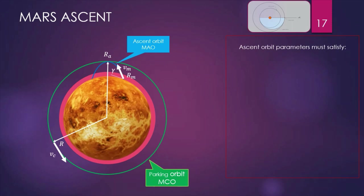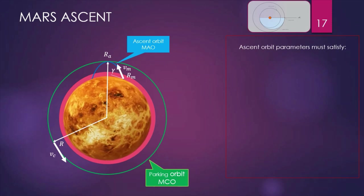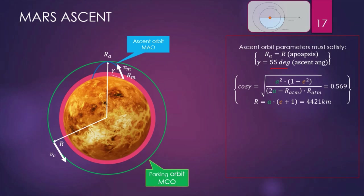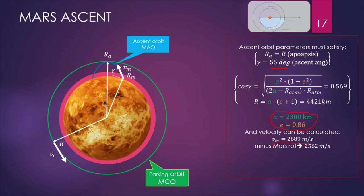Let's talk about the Mars ascent. In this case, we assume that the ascent orbit is elliptical and the conditions to be satisfied are: the radius at the apoapsis must be the same as for the parking orbit, and the flight path angle gamma must be 55 degrees — this is an assumption. By means of those conditions, we determine the parameters of this new ascent orbit, and also the velocity at the Mars surface: 2,689 m/s, minus the rotation correction, giving us the adjusted value. Finally, the velocity at the apoapsis and the delta-V which needs to be applied at that point in order to enter the circular orbit.